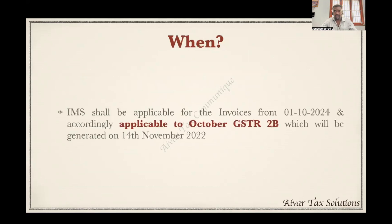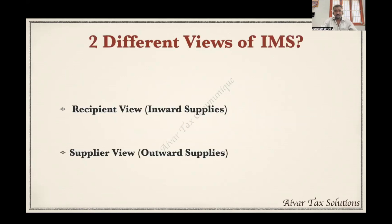When is IMS implemented? With effect from 1st October 2024, the first advisory states all invoices from 1st October 2024 will be covered under IMS. The second advisory states it will be enabled in the portal after 14th October. This means it is applicable for invoices from 1st October — so for the October GSTR-2B generated on 14th November, we may use the IMS facility. There are two different views in IMS: the recipient view and the supplier view.